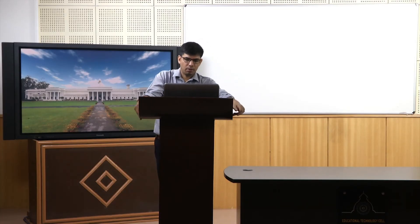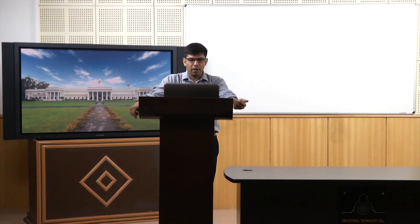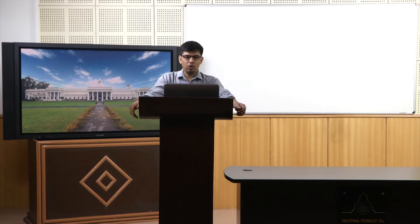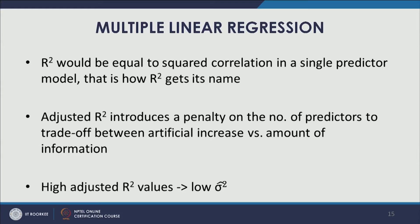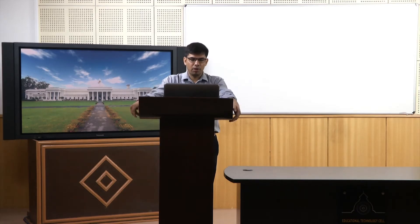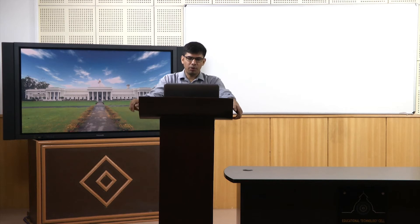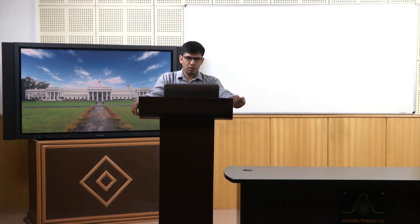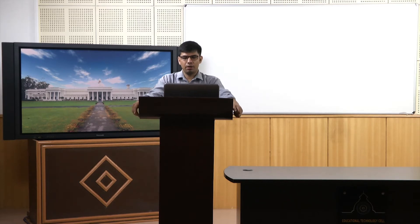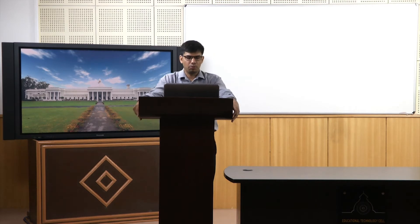Another way to understand R-squared is that it equals the squared correlation in a single predictor model. If we just had Y regressed on X1, the R-squared would be the squared correlation — that being the single predictor case. The correlation coefficient is expressed using small r, and if we square that, we get R-squared. That is how in the single predictor case R-squared gets its name, coefficient of determination.